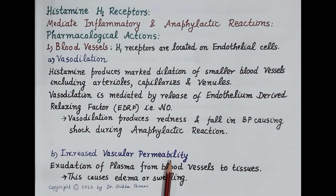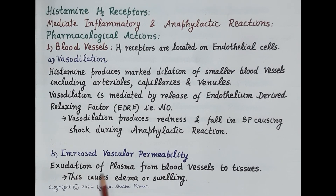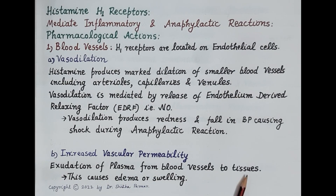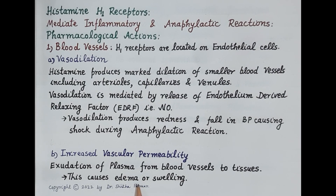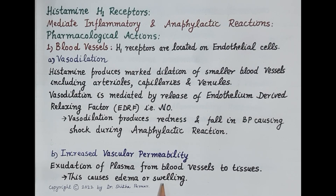Histamine causes increased vascular permeability. As blood vessels expand, spaces between endothelial cells increase and plasma flows from the blood into the tissues — this is called exudation of plasma. Accumulation of plasma fluid in the tissues causes swelling, or edema. Inflammation of tissues is characterized by redness and edema. Inflammation of nasal tissue causes sneezing and runny nose in allergy.